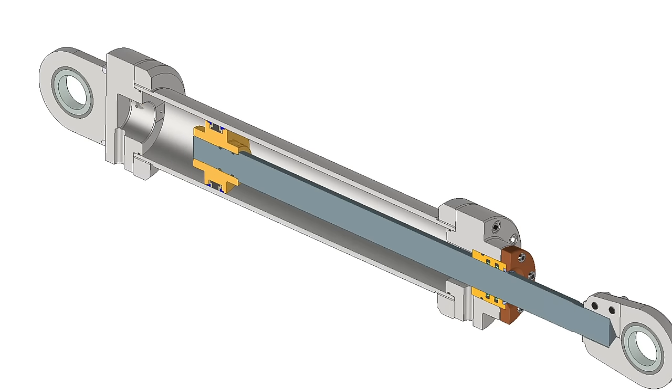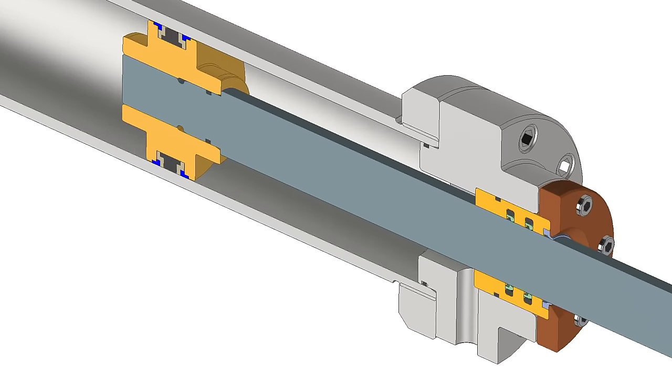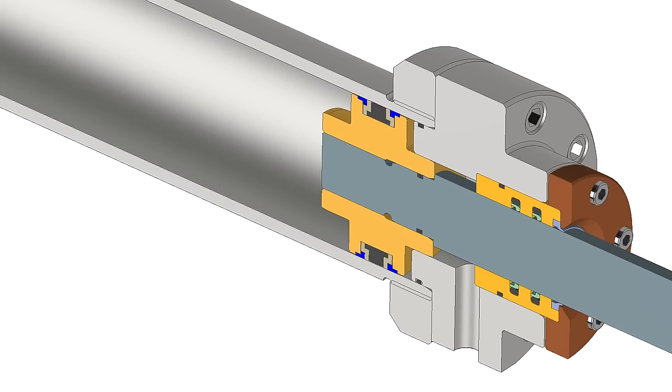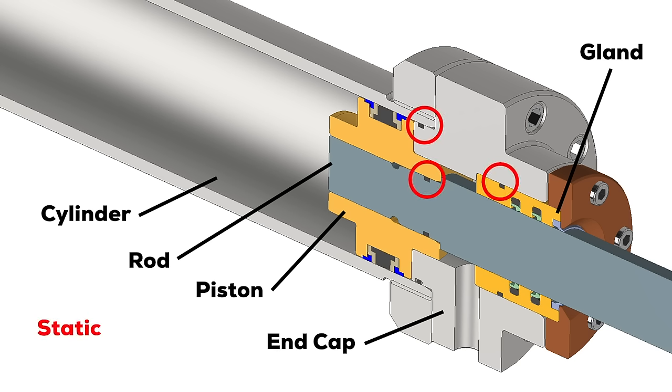Seals can generally be classified as either static or dynamic. This hydraulic cylinder has examples of both. The seals between the cylinder and the end cap, the gland and the end cap, and the piston and rod are static seals, since these components don't move relative to one another after the cylinder is assembled. The seals between the piston and the cylinder and the rod and the end cap are dynamic seals, since these components slide when the cylinder is actuated.